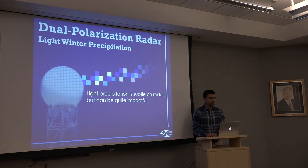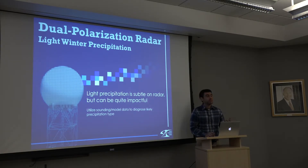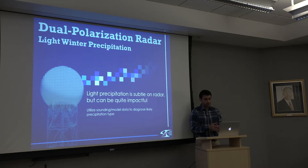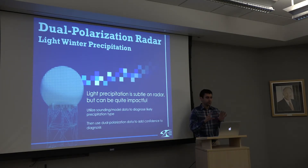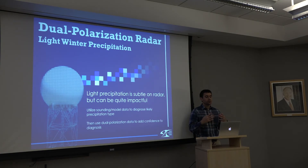This light winter precipitation is subtle on radar — maybe 0 to 5 dBZ in reflectivity, hardly anything — but it can be quite impactful. We want to utilize sounding and model data to diagnose expected precipitation type and how it will evolve, but to really hone in on how it's changing in the near term we can use dual-pole data to add confidence to exactly what we're dealing with: hydrometeor shapes, sizes, is it supercooled water, is it freezing drizzle, are they little flurries. These are the things dual-pole data can tell us when combined with our knowledge of the thermal environment from soundings and model data, plus ground reports from spotters.